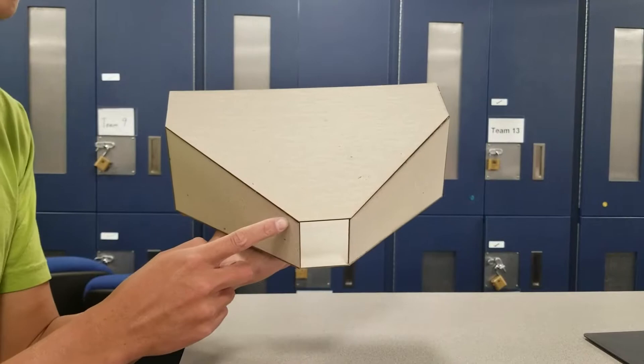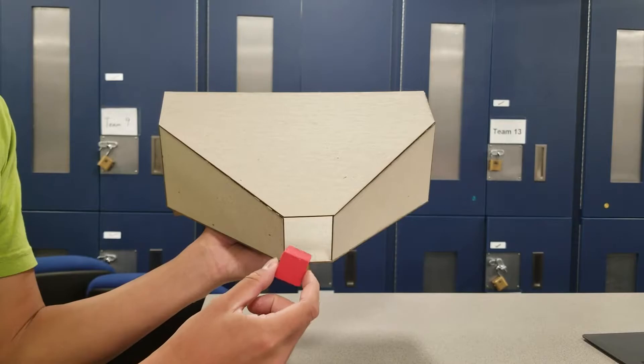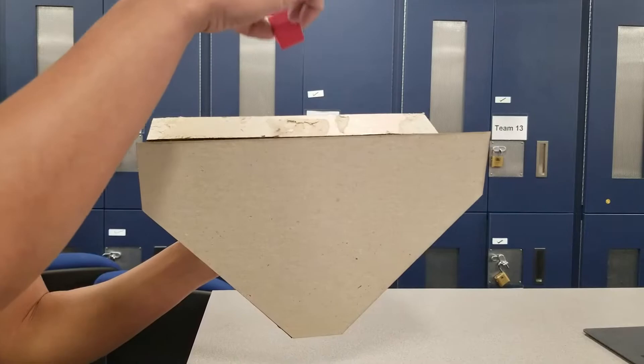This is the funnel. The top entrance is much larger than the bottom exit. The bottom exit is a square shape that has a side length slightly larger than the diagonal of the object. This design will make sure the object falls into the funnel from the top, meanwhile the object won't get stuck at the bottom.